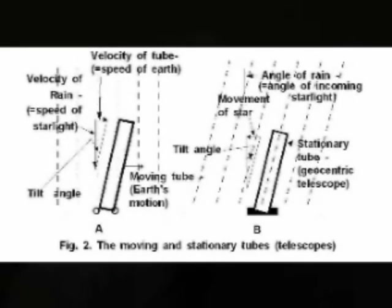Therefore you can find out whether the telescope is moving or the starlight. Airy filled the telescope with water and compared it with previous measurements of the same star, and he did not have to tip that telescope any further than in the previous set of readings when the telescope was without water. That showed very clearly that it was not the telescope that was moving, but the starlight and the ether moving relative to a stationary telescope.